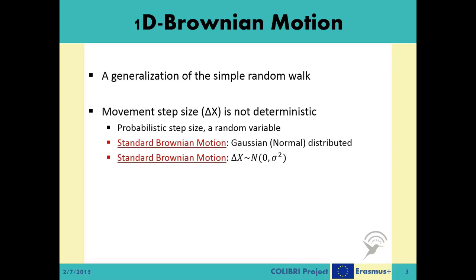The fact that the mean value of the distribution is zero means that, on the average, the particle will try to stay at the location where it starts moving. Hence, there is no drift in any direction. Similar to the step size, the time step delta t is also not fixed.